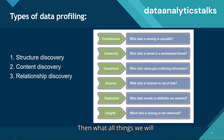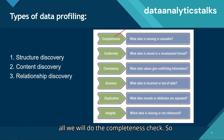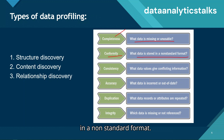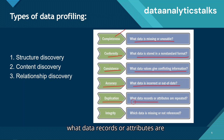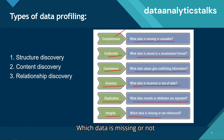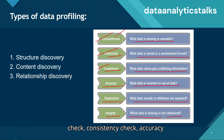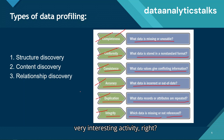During data profiling we evaluate several dimensions: completeness — what data is missing or unusable; conformity — what data is stored in a non-standard format; consistency — what data values give conflicting information; accuracy — what data is incorrect or out of date; duplication — what data records or attributes are repeated; and integrity — which data is missing or not referenced.